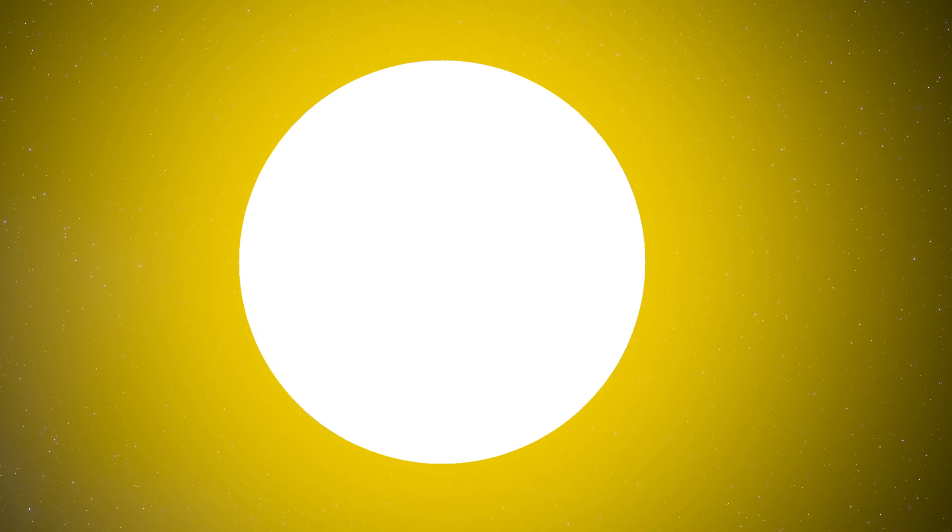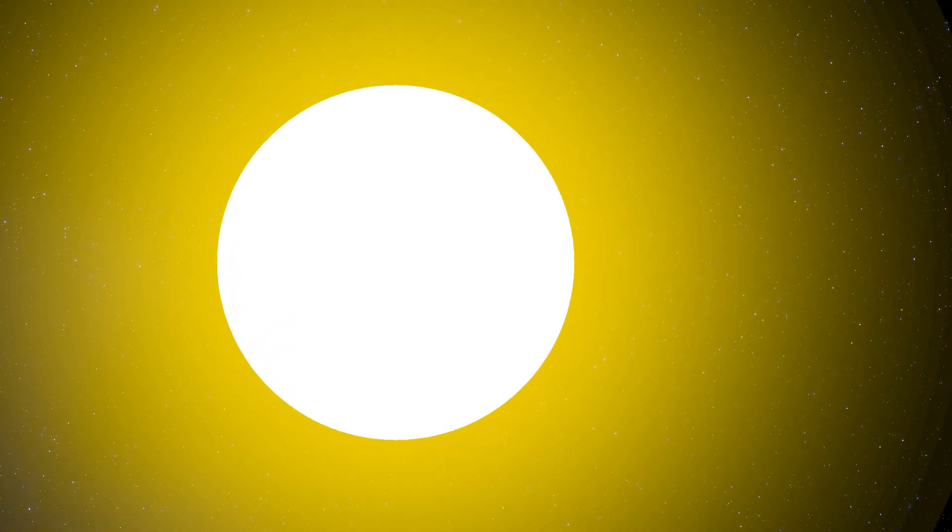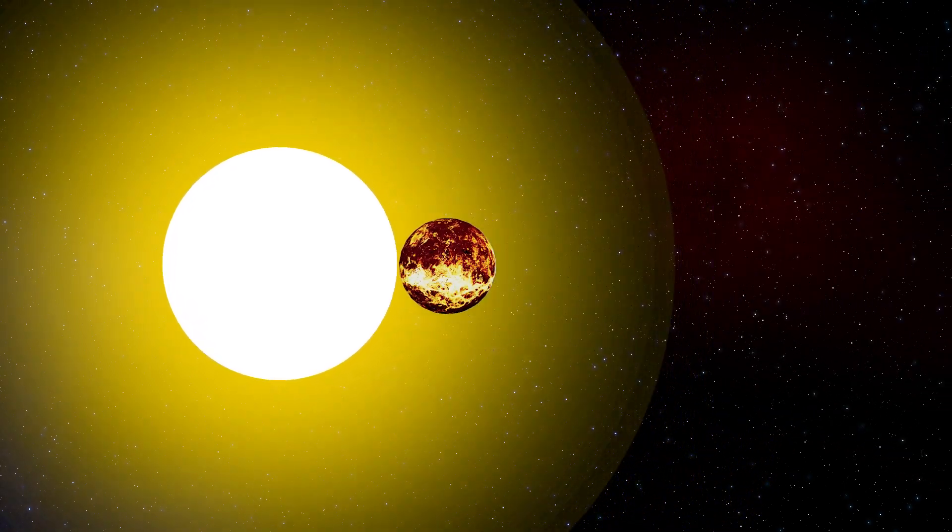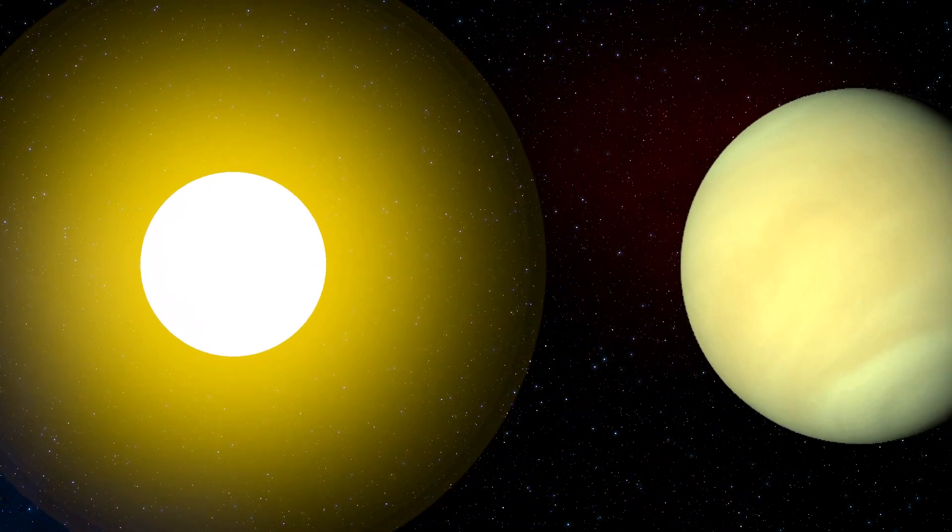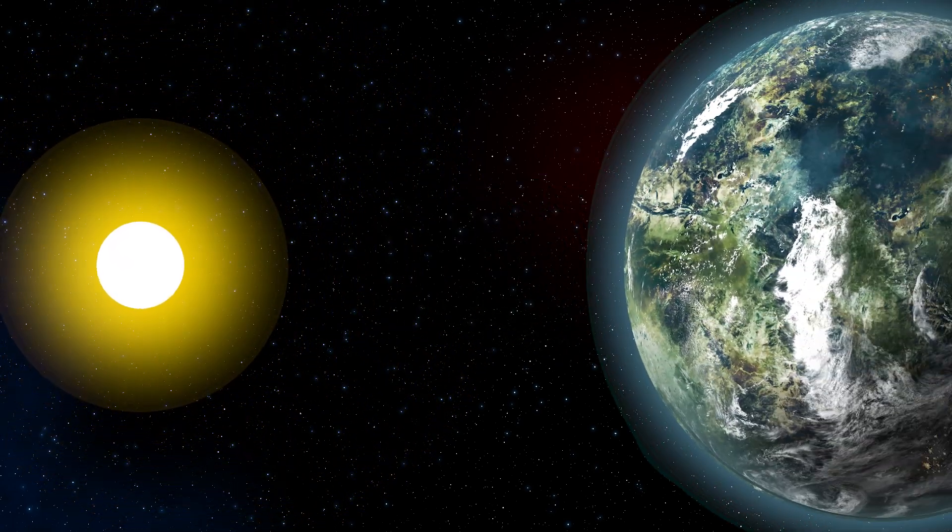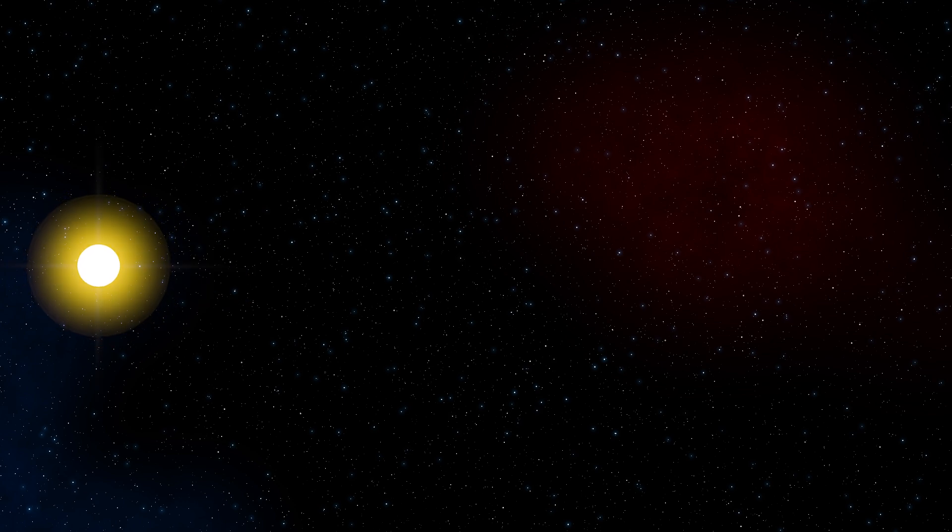Espa is the third planet in a system of nine planets. In order from their parent sun, there is Kundor, a small lava planet without much of a solid crust. Venal, an obvious Venus analogy that has a lot of sulfur. Then there is Espa itself, orbited by five moons. An asteroid belt, separating the inner system from the outer system.